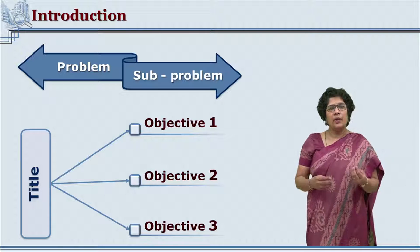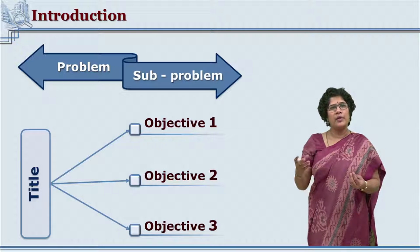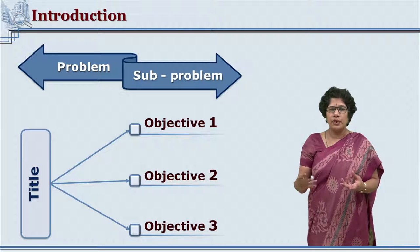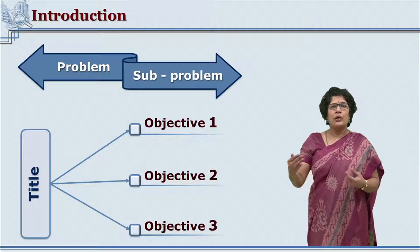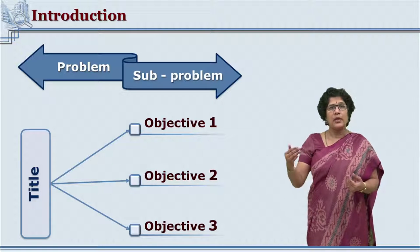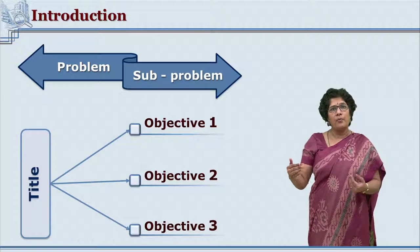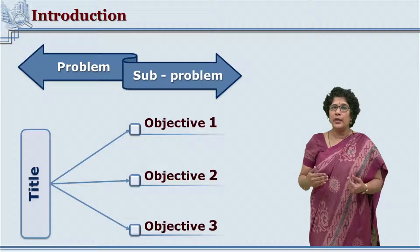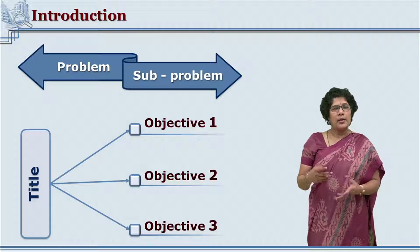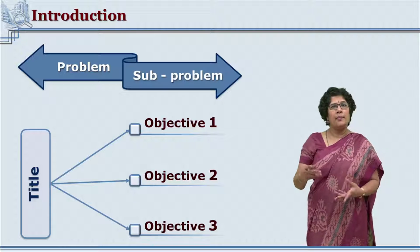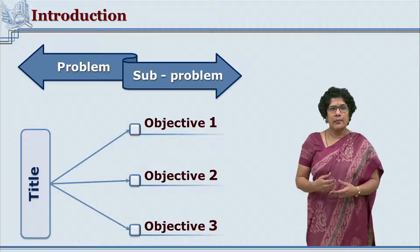A particular research may generate, say, three objectives. Those three sub-problems could be stated independently. We shall understand this with the help of an example. We shall see a research title and how the objectives are written for that title.